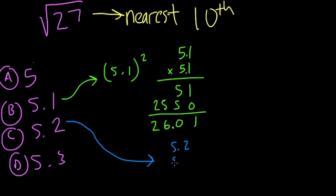So 5.2 times 5.2. I just think initially of 52 times 52, and we get 2 times 2 is 4, 2 times 10, 2 times 5 is 10, 5 times 2 is 10, 5 times 5 is 25, plus 1 is 26. So what happens is I get 27.04.